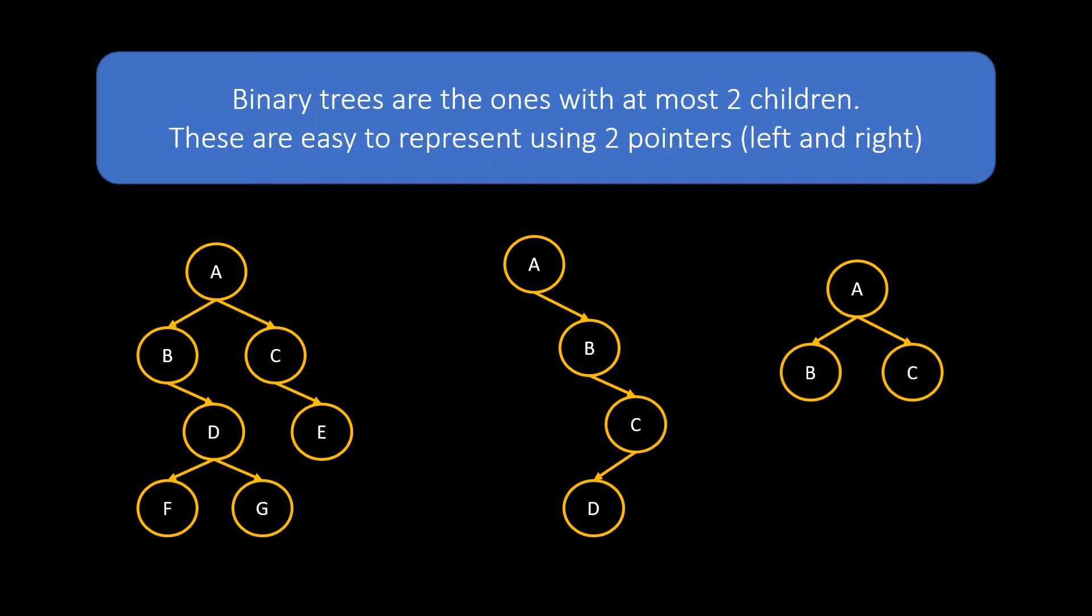Binary trees are the ones with at most two children. These are easy to represent using two pointers left and right.